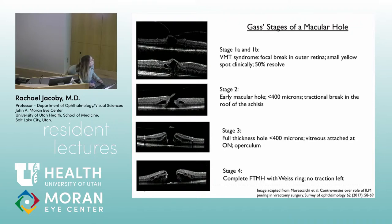In a stage 3 hole, a little bit of retina is lifted off with an operculum overlying the full thickness hole, and the vitreous is lifted off the fovea but still attached at the optic nerve. For a stage 4 hole, there's a complete full thickness macular hole defined by a Weiss ring — the vitreous is separated off the optic nerve as well, giving you a complete PVD.